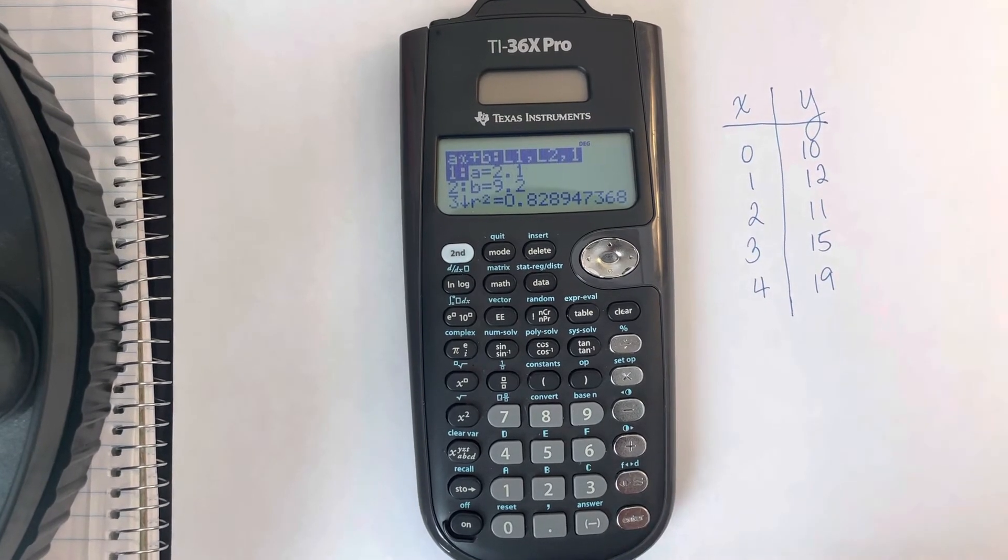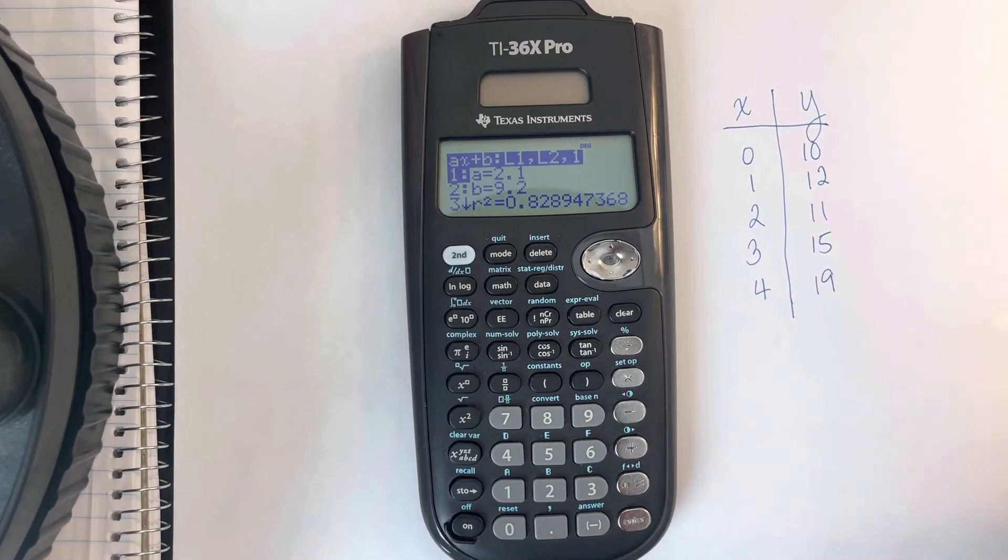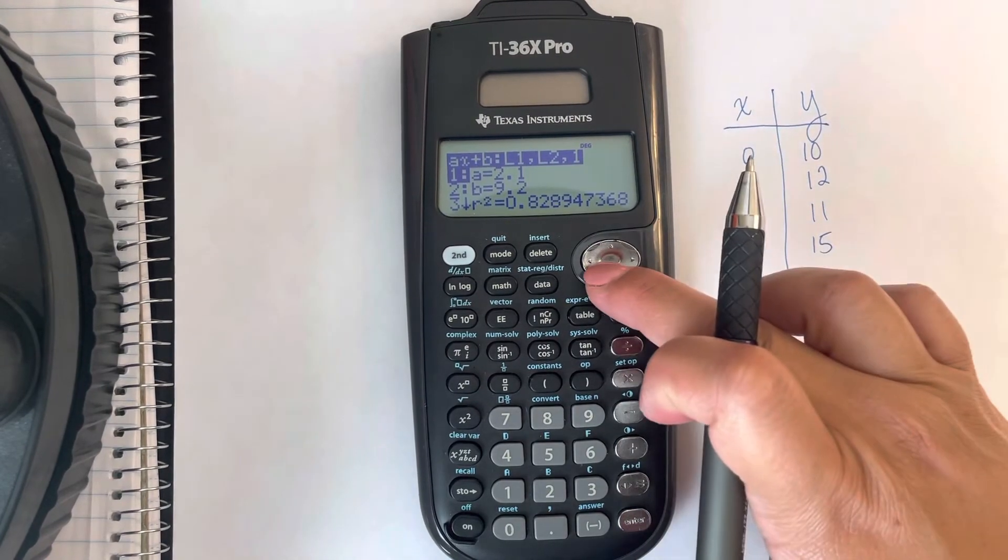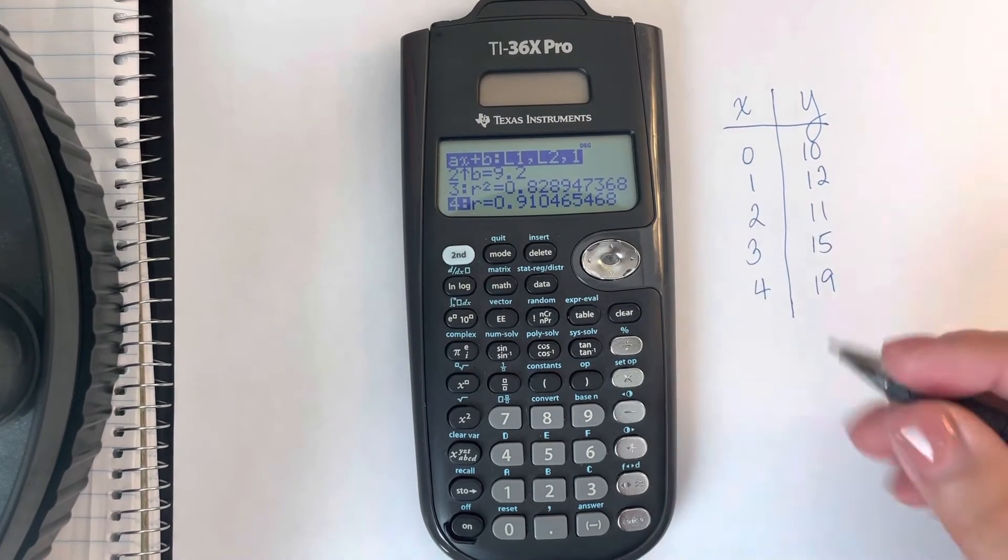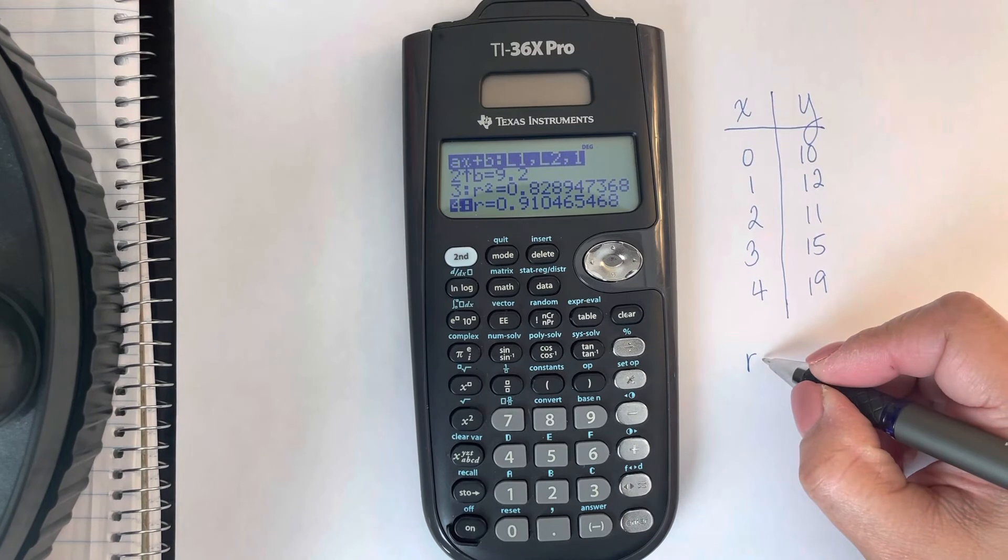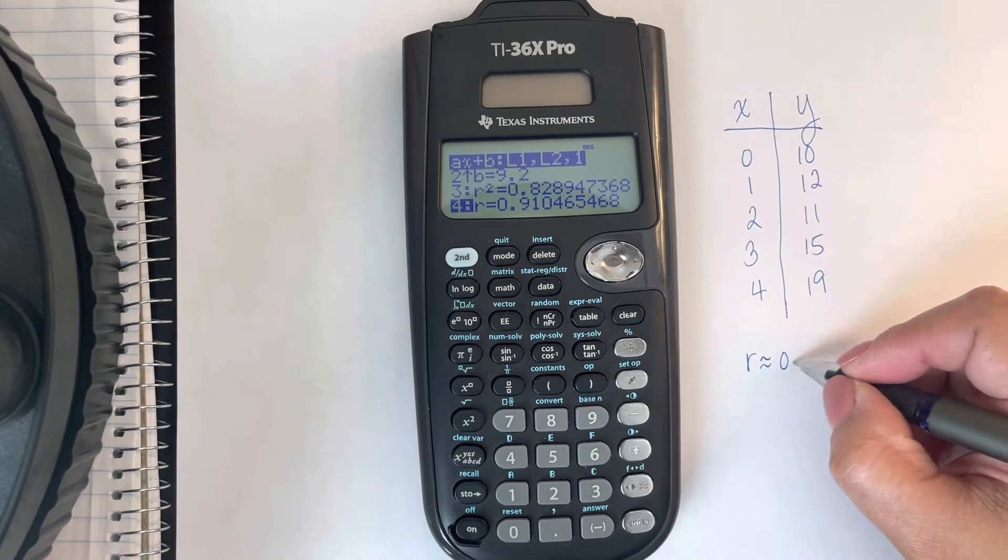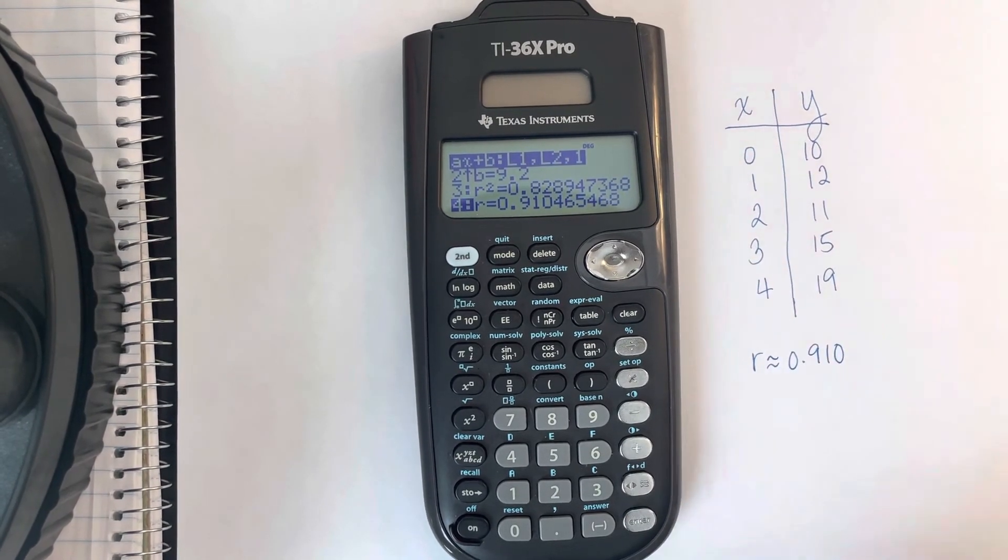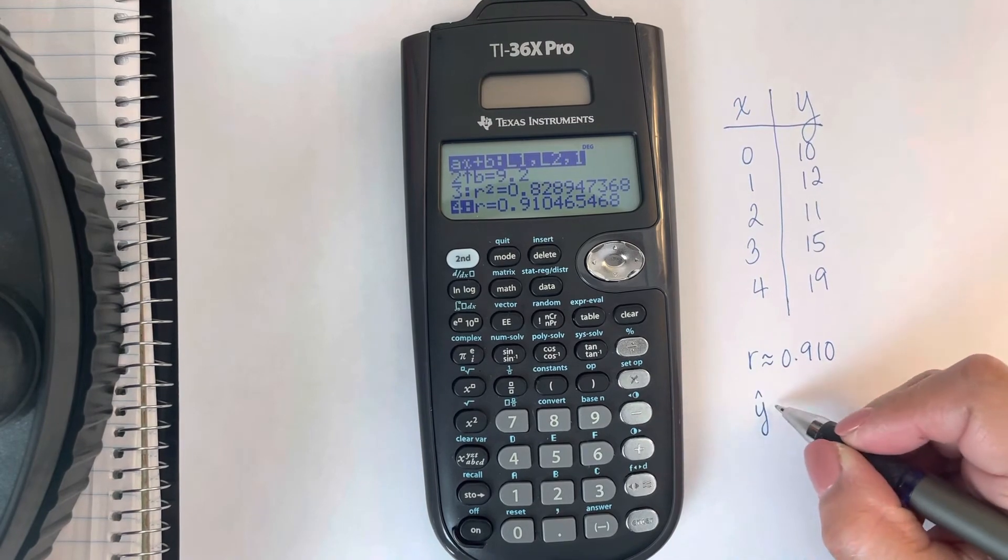When we hit Calculate, we will have A, B, and then for R we'll have to scroll down and there it is. For this particular example, R is approximately 0.910 and then let's write our regression equation.